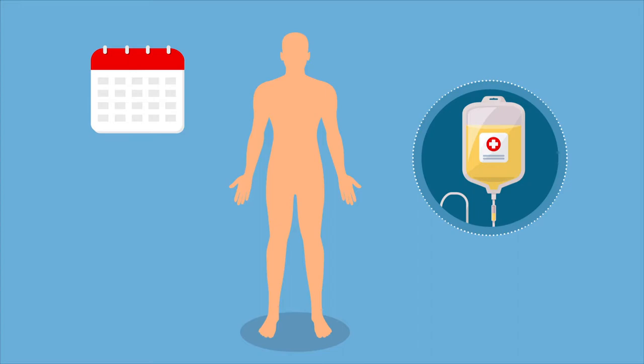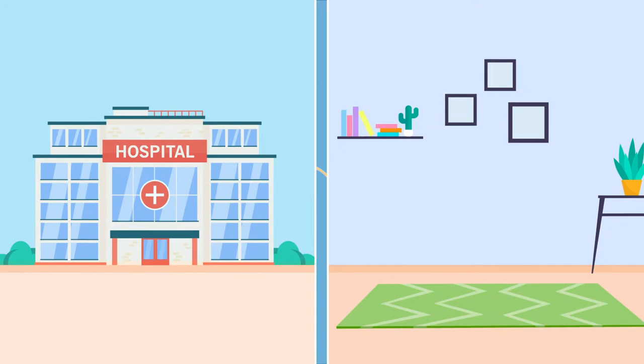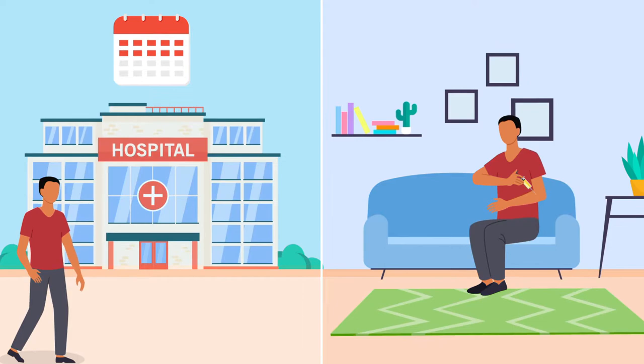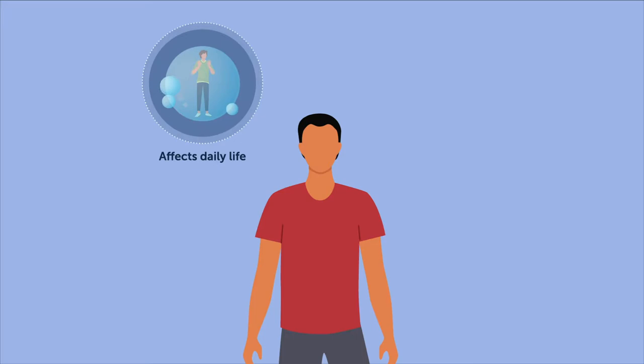The current gold standard for prophylactic treatment is replacement therapy, comprising lifelong regular intravenous injections of recombinant F9. But infused F9 has a short half-life in blood, meaning that patients must visit their healthcare center multiple times a week or inject the medicine at home intravenously.